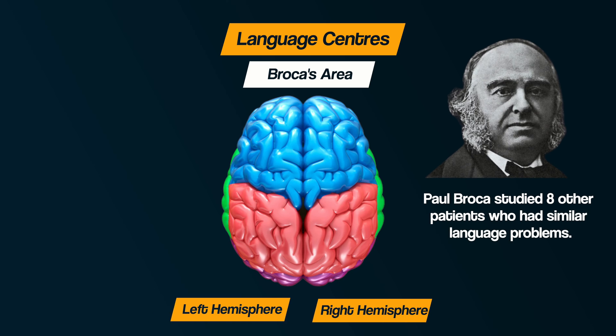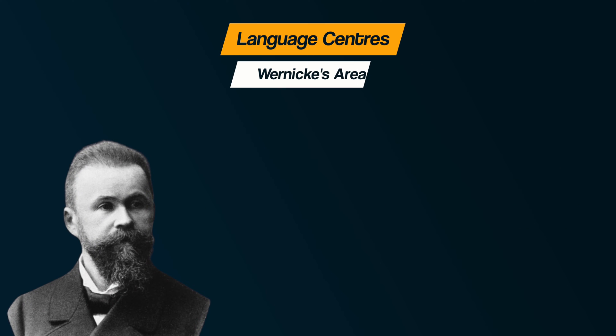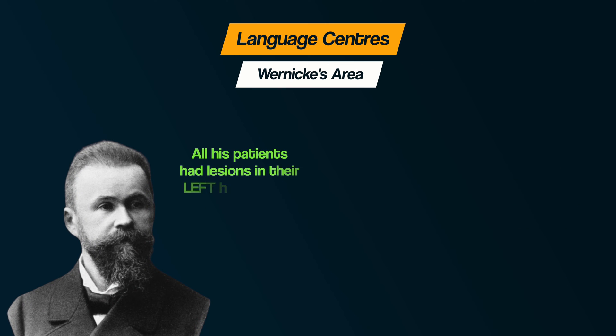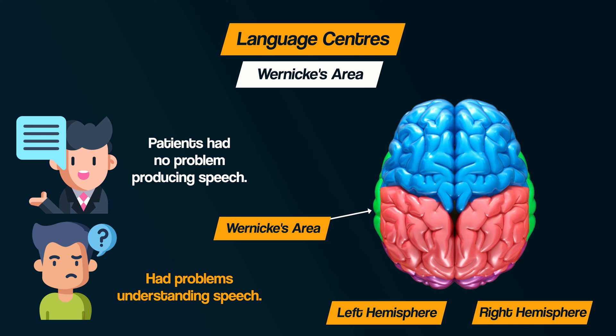Additionally, Broca went on to study eight other patients who had similar language problems, and all of them had lesions in their left frontal hemisphere. Then there's Wernicke's aphasia — Carl Wernicke's patients all had lesions in the left temporal lobe, and they had problems not with producing speech but with comprehending speech. Notice from these cases that language appears to be lateralised: the ability to produce and understand speech appears to be in the left hemisphere.